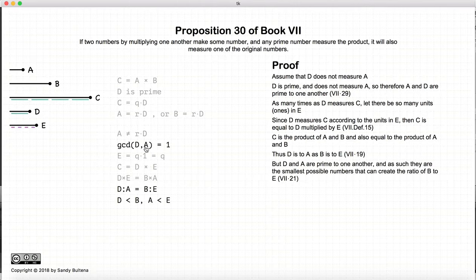Now since A and D are relatively prime, and we have a ratio D to A, which is equal to another ratio B to E, we know that D and A are the two smallest numbers that can represent the ratio D to A. So we know that D is less than B, and A is less than E.